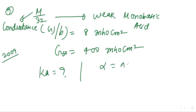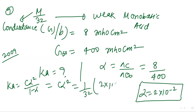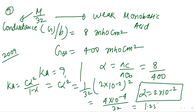We know the alpha value: alpha equals molar conductivity at C divided by molar conductivity at infinity. C concentration we know; at infinity it is 400. So alpha will be 2×10⁻². This is the degree of dissociation. K equals Cα²/(1−α), which simplifies to Cα² only. C is M/32, so it is 1/32. Alpha is (2×10⁻²)², giving 4×10⁻⁴ divided by 32, which equals 1.25×10⁻⁵. This is the dissociation constant.